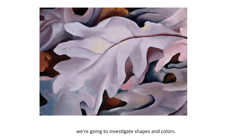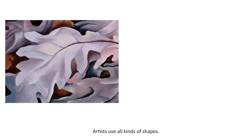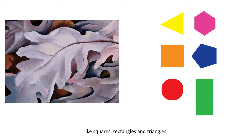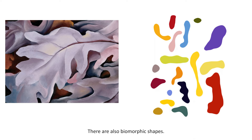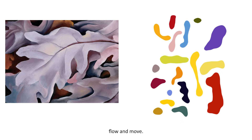Let's begin by looking at shapes. Artists use all kinds of shapes. There are geometric shapes, which are precise and regular, like squares, rectangles, and triangles. There are also biomorphic shapes. The word biomorphic means life form. These shapes are often rounded and irregular, and may look like things that grow, flow, and move.